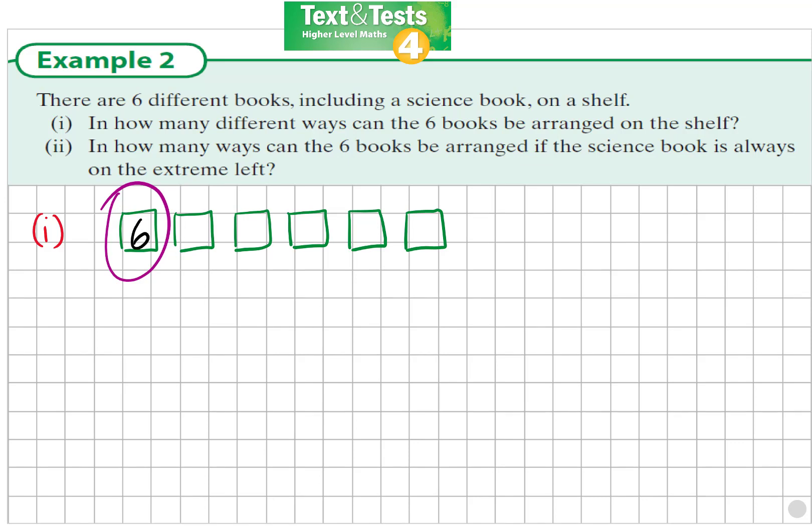So we have six options here. In the second position, we've used up one of the books, there's only five books left, so we have five options for that position. As we go down the line we'll see we have four, three, two, and only one option for the last position.